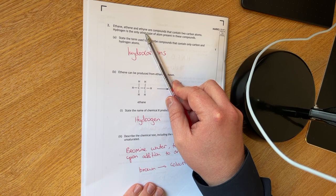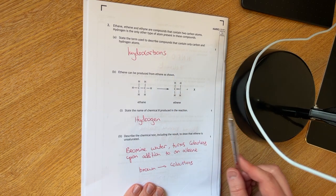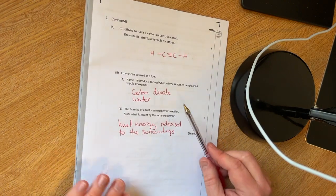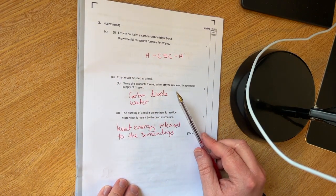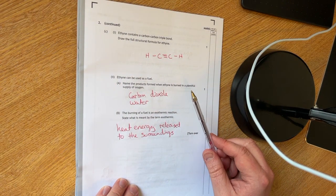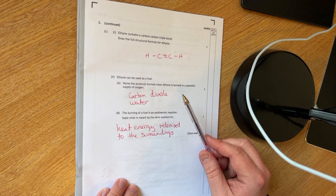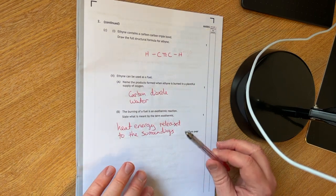This is a bit of a problem solving question because we don't typically show you ethyne in the National 5. You actually see that in the advanced higher, I think. So yeah, a little bit of a problem solving question there.